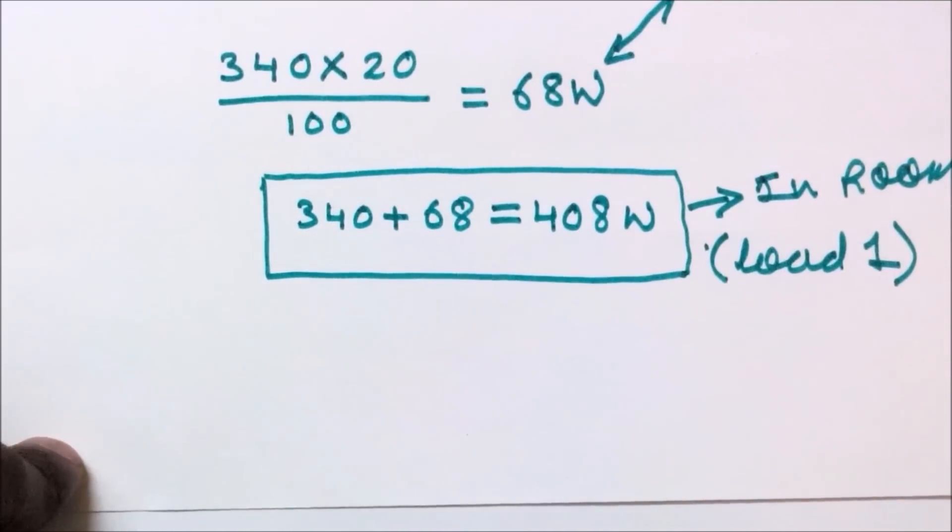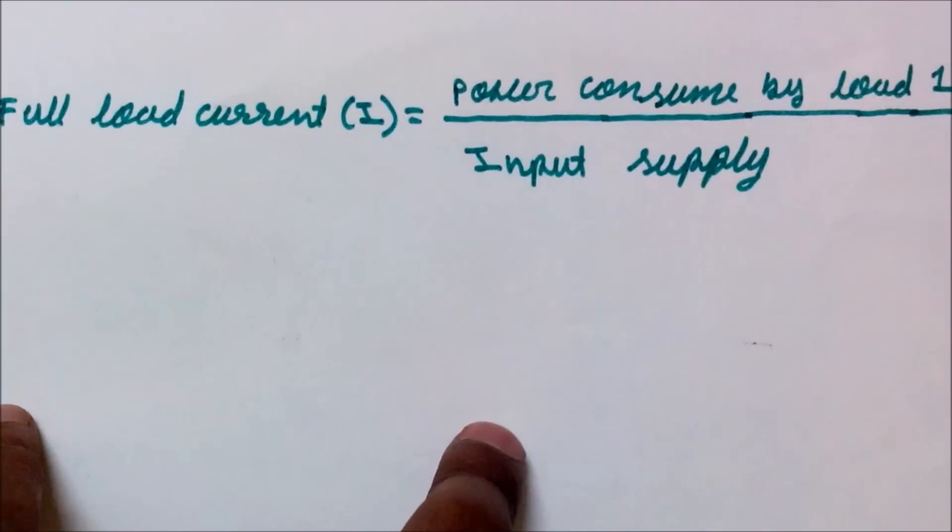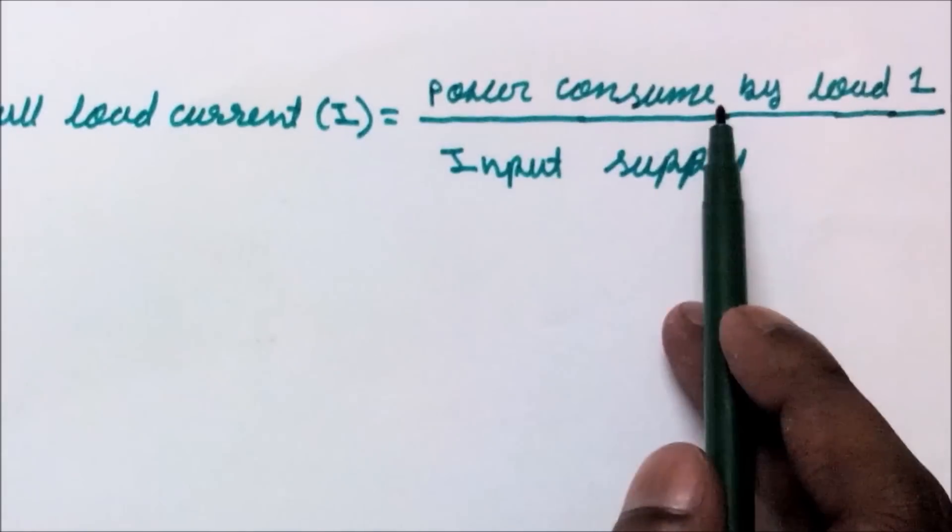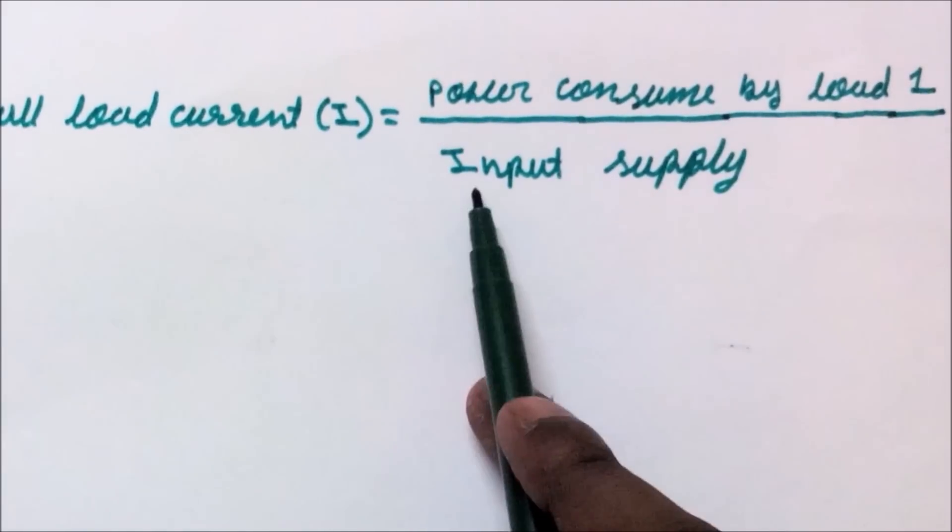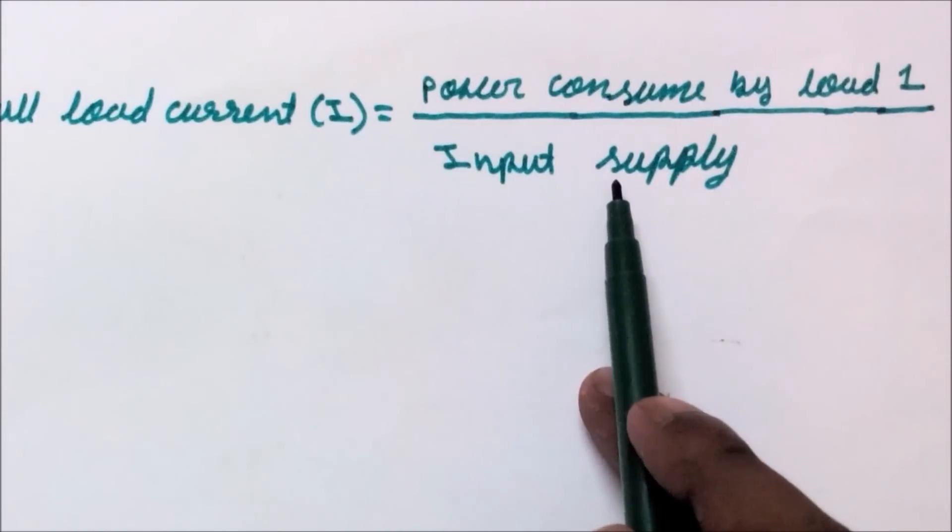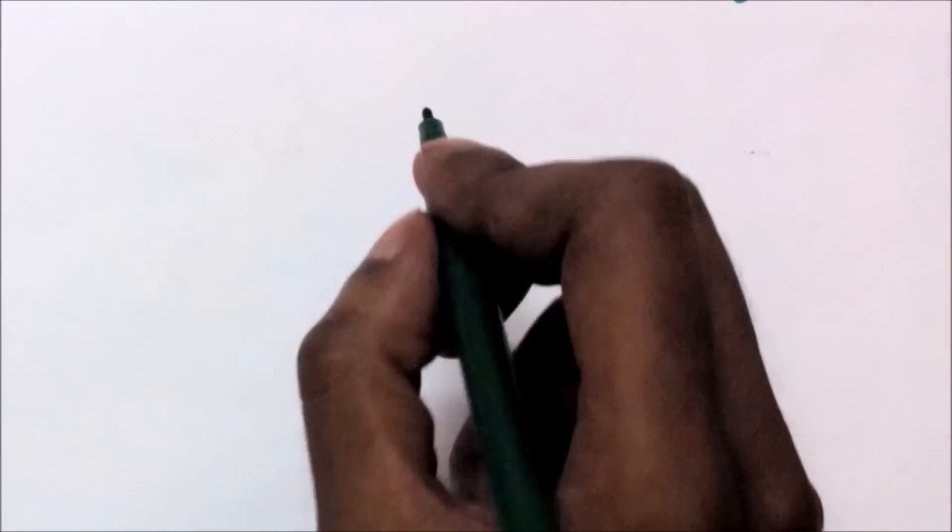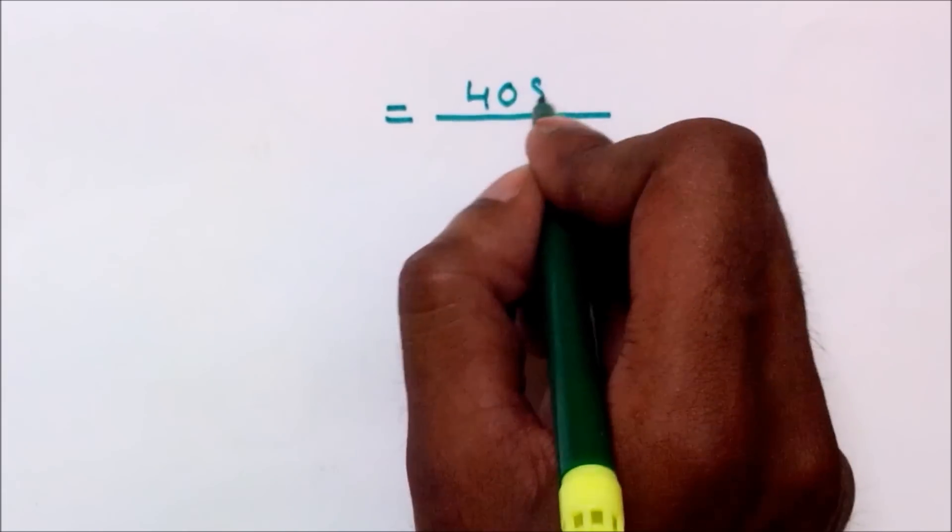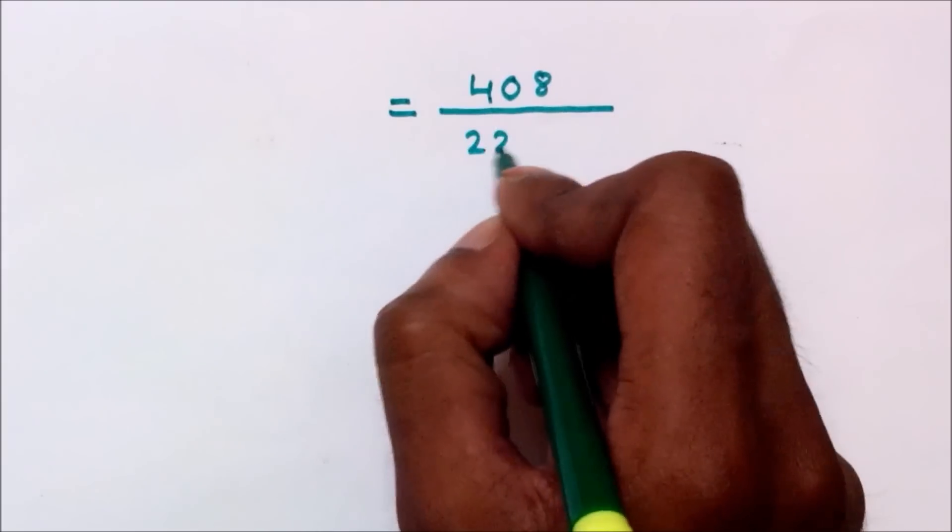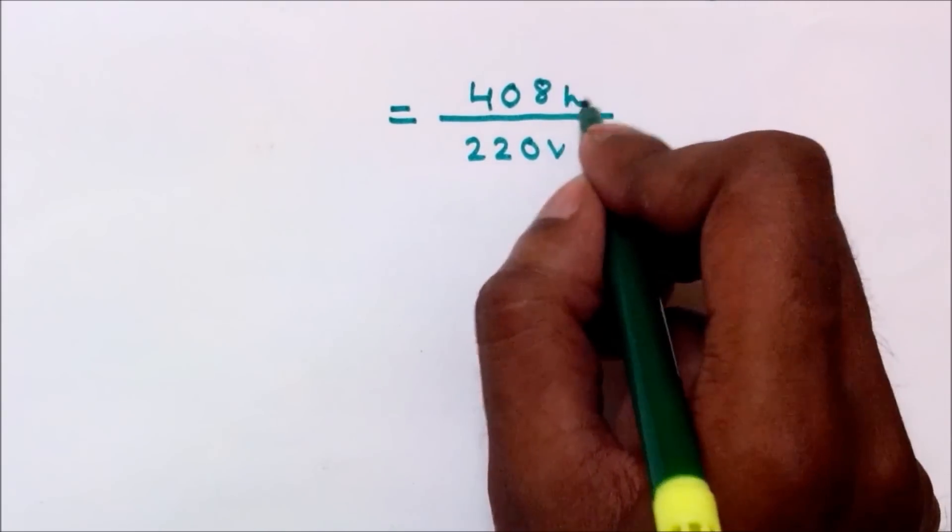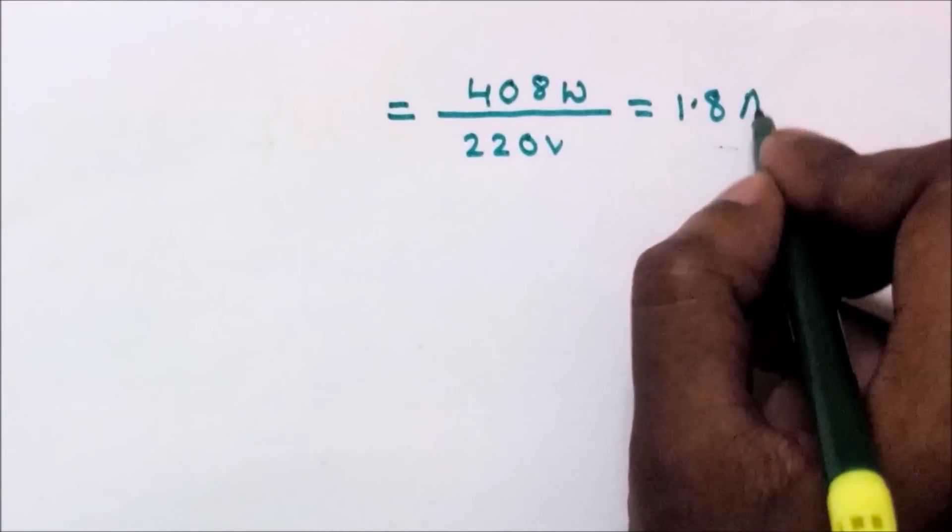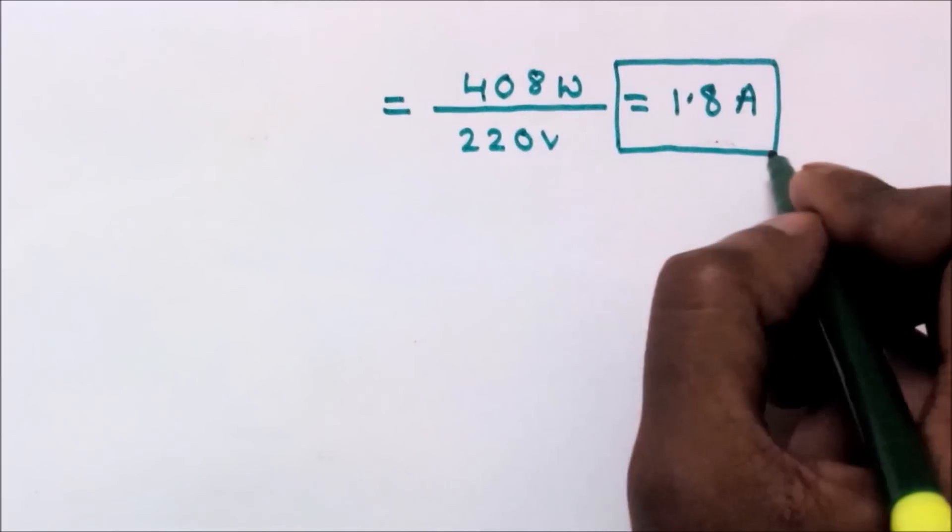We have to find full load current of load 1. By using this formula, full load current equals power consumed by load 1 divided by input supply, that is 408 watts divided by 220 volts, which gives us 1.8 ampere. This is our full load current of load 1.